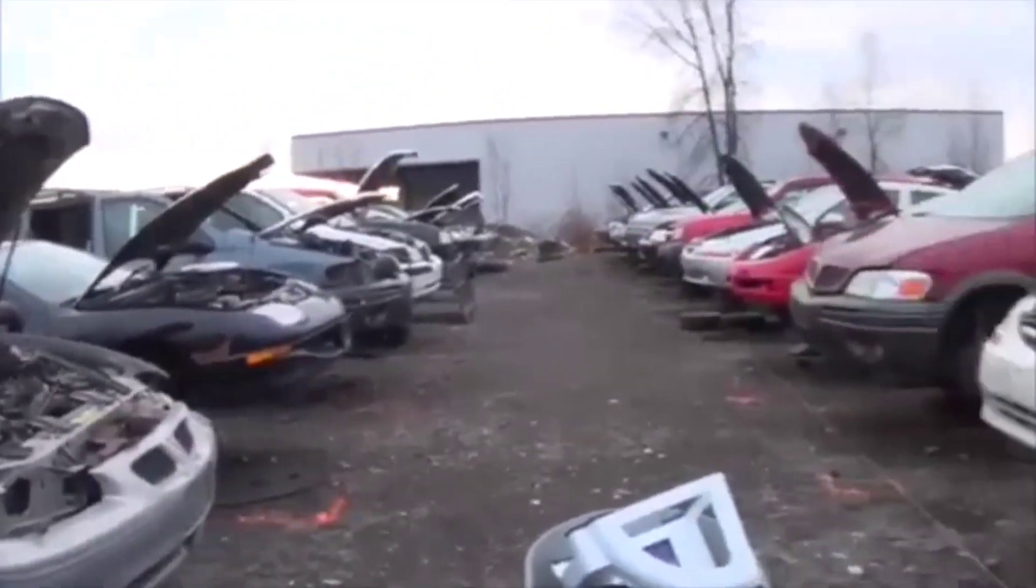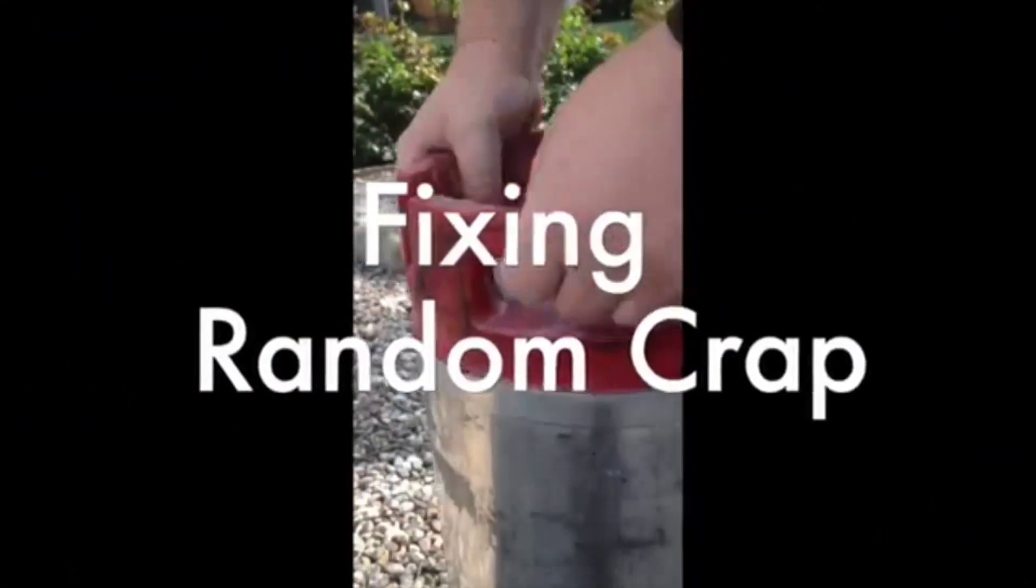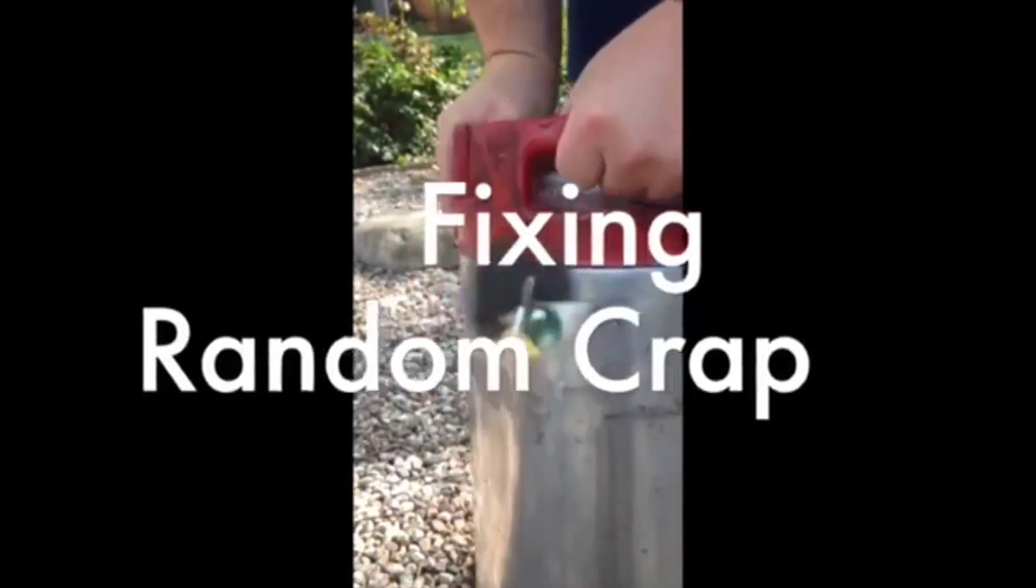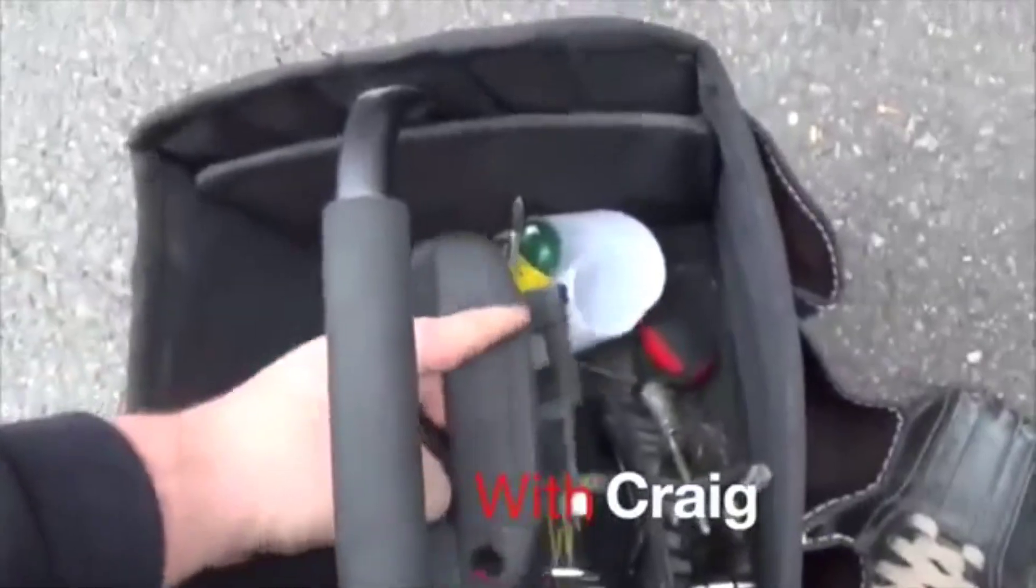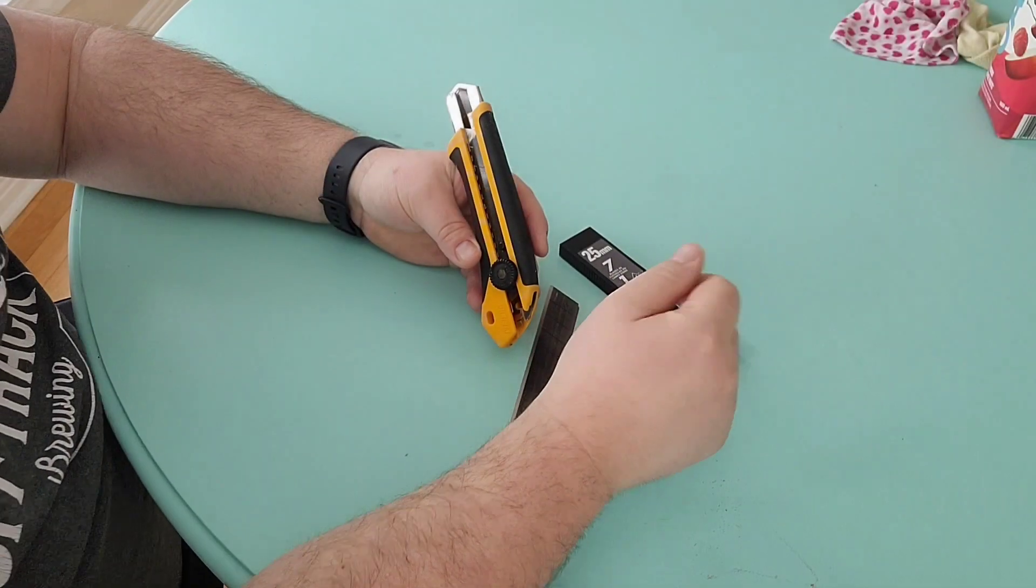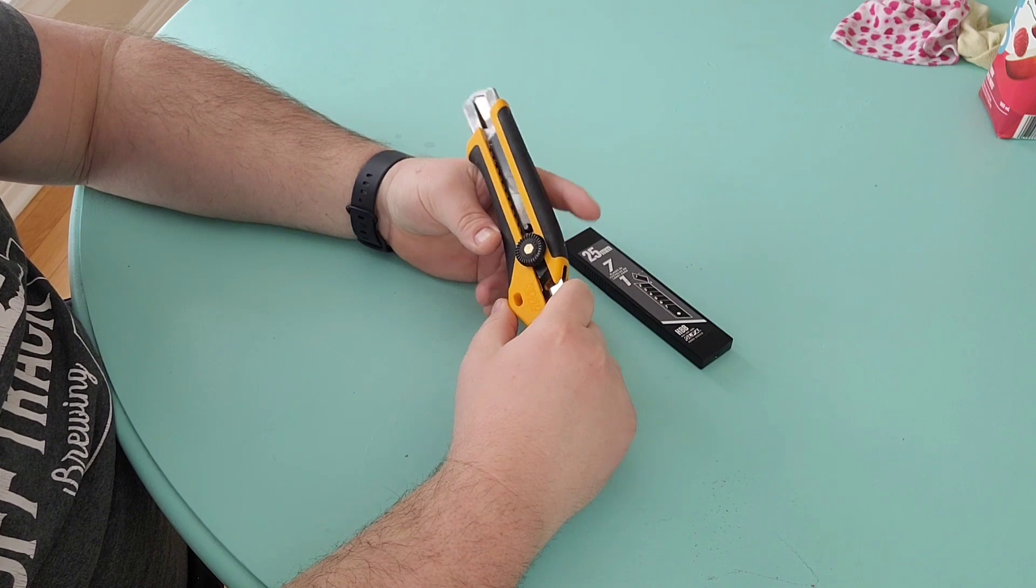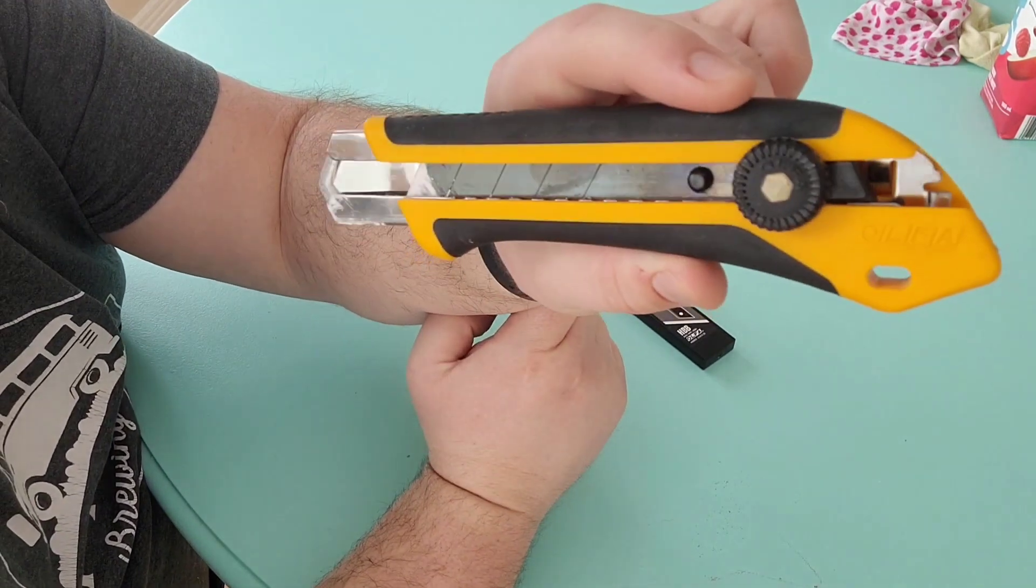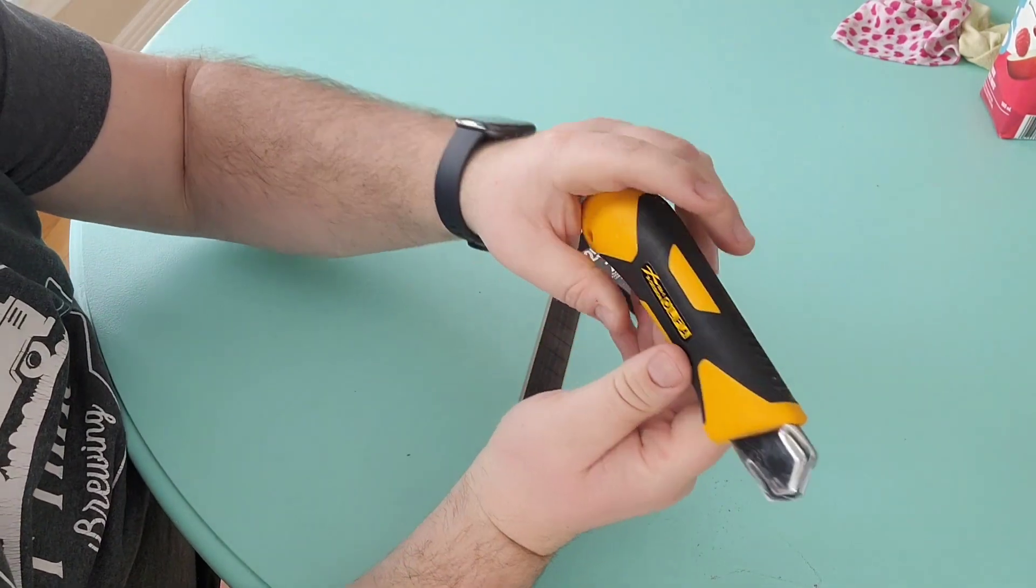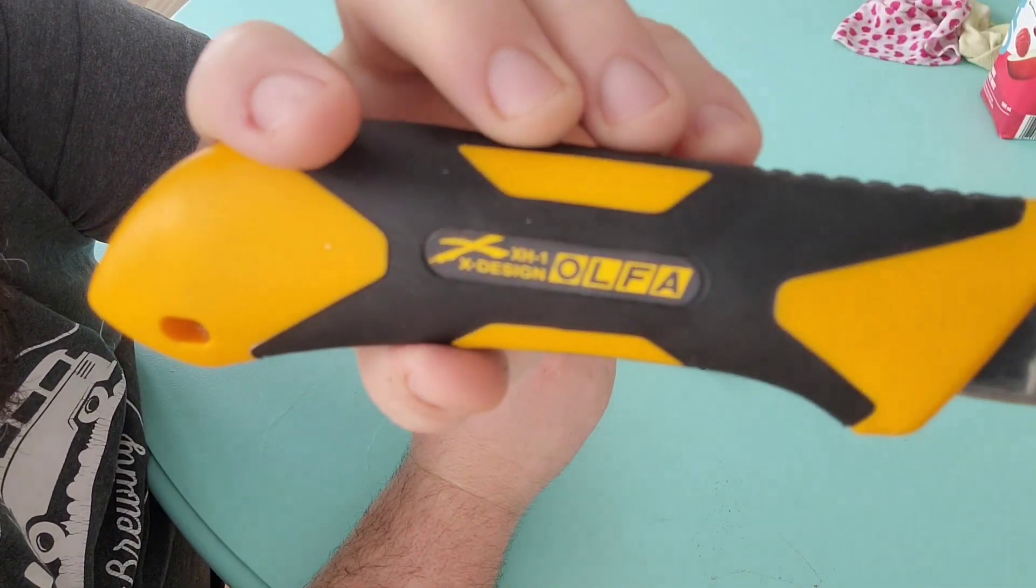All right, here we are at Canadian Junkyard. Pro tip here, everybody. Welcome back to your favorite YouTube show, Fixing Random Crap with Craig. Today we're trying to change the blade on this Olfa knife, the HX1.